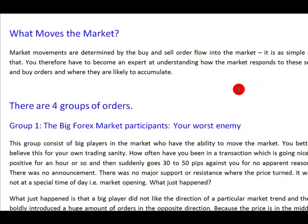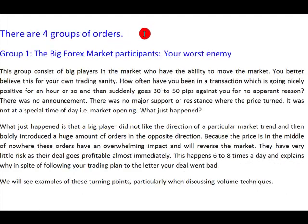There are essentially four groups of orders. The first group consists of orders introduced by the big forex market participants — big players who have the ability to move the market 20 to 50 pips for no apparent reason. Often you are in a trade that is moving beautifully, not near any support or resistance level, with no announcement happening, and suddenly the trade stops and reverses very sharply.